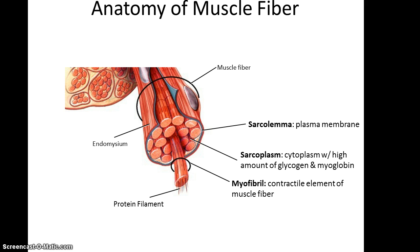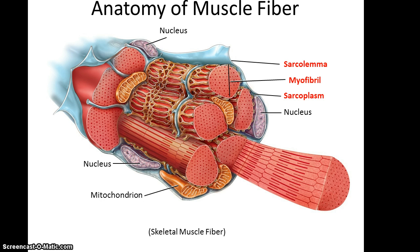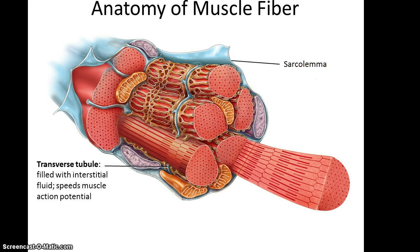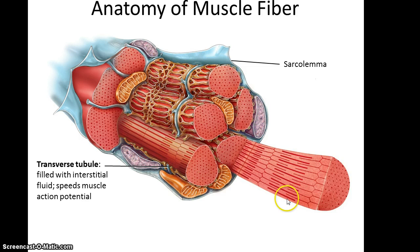And then we have these long rod-like structures called myofibrils, which are actually the contractile element of the muscle fiber — this is what will shorten when the muscle contracts. Another key feature of the muscle cell is these little invaginations of the sarcolemma, which form tunnels that go all the way through the muscle fiber and wrap around the myofibrils. These structures are called transverse tubules. Since they are contiguous with the outside, they are filled with interstitial fluid, and their purpose is to help speed up the muscle action potential by bringing the current into the body of the cell next to the myofibrils.